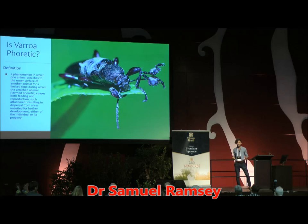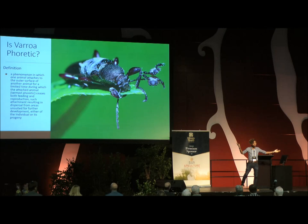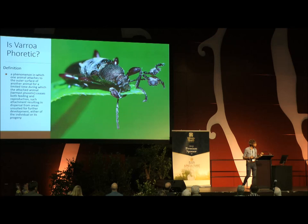We say that Varroa destructor has two life stages, right? It has the reproductive stage and the phoretic stage — or actually maybe not correct. Because those are the two that we attribute to this organism. However, the term phoretic means something very specific that probably doesn't actually apply to this organism.